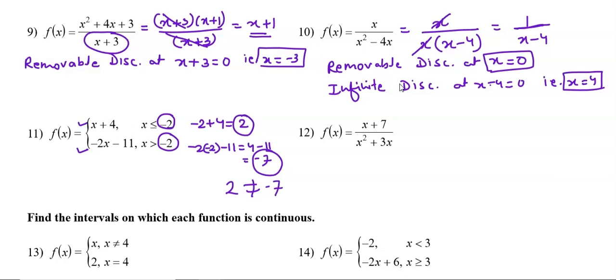This is the third kind of discontinuity — jump discontinuity at x = -2.